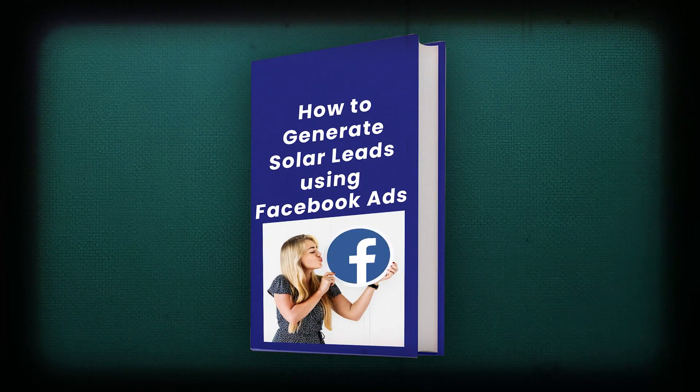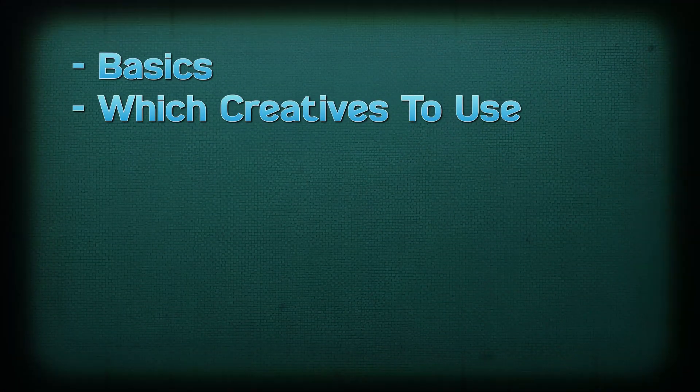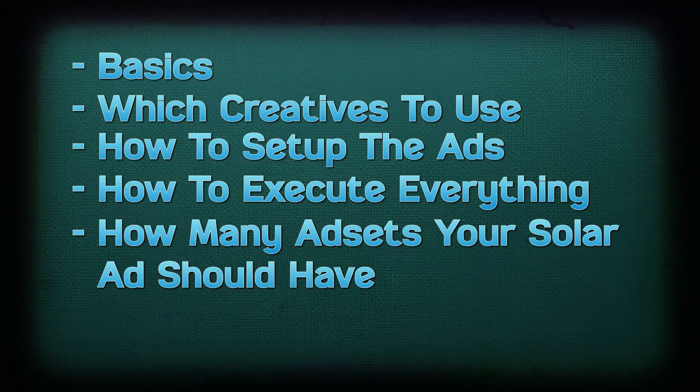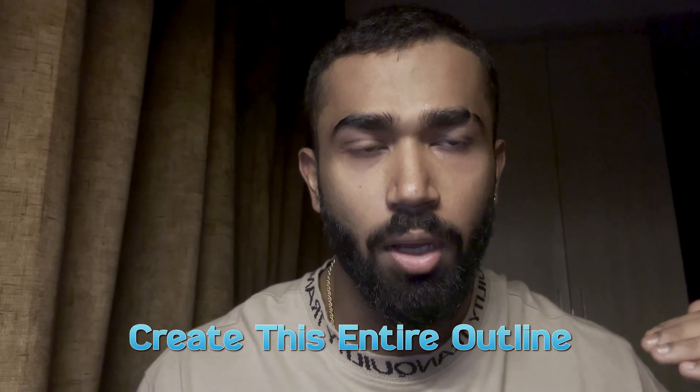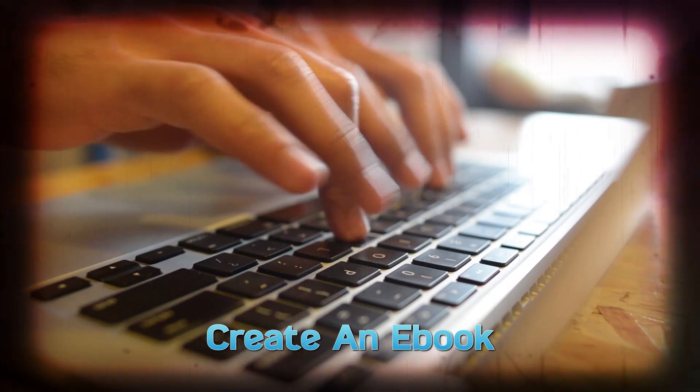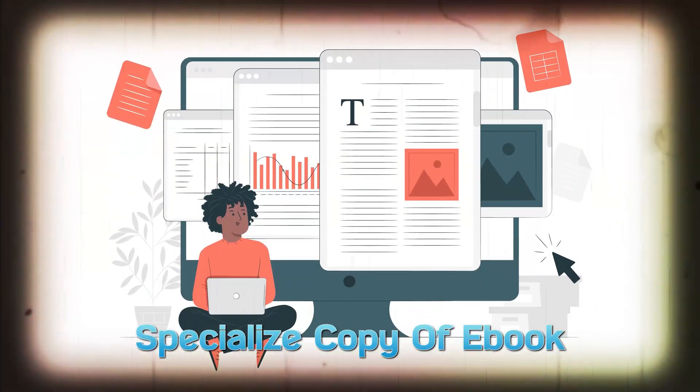Let's say my industry is solar — for my agency I'll go to ChatGPT and give it an outline about everything I know about solar. I can create an ebook on how to generate solar leads using Facebook ads. The outline would cover: basics, which creatives to use, how to set up the ads, how to execute everything, how many assets your solar ads should have, whether to use CBO or ABO, how many ad sets a campaign should have. Then I'll ask ChatGPT to create an ebook from this outline and get that specialized copy.